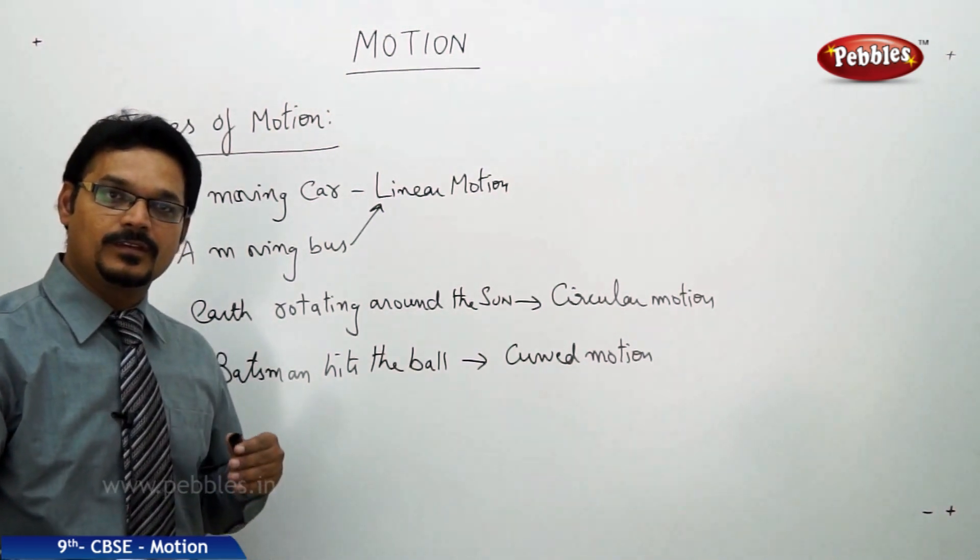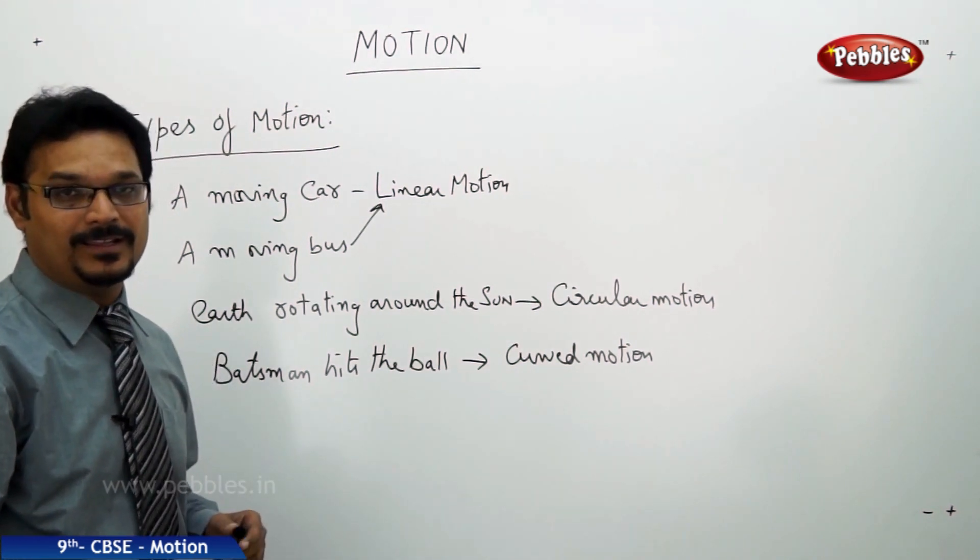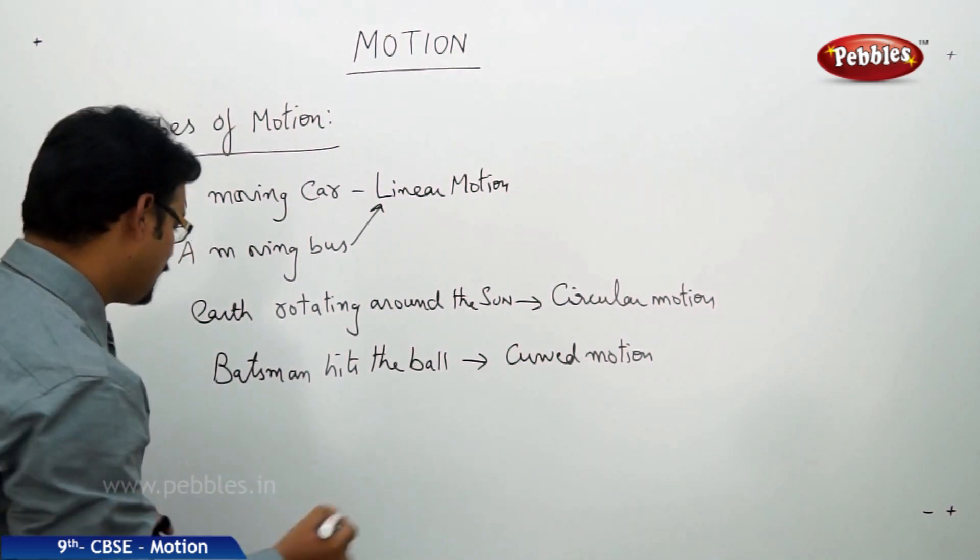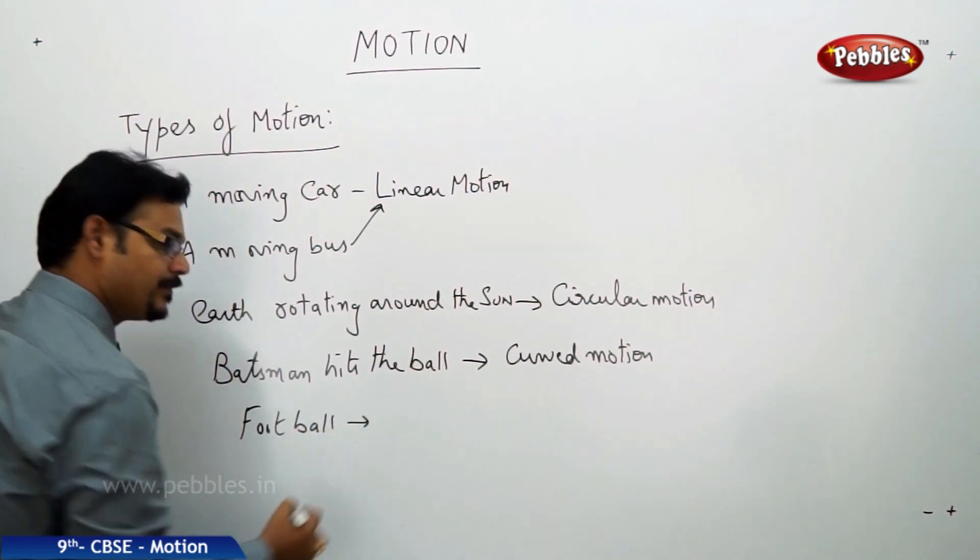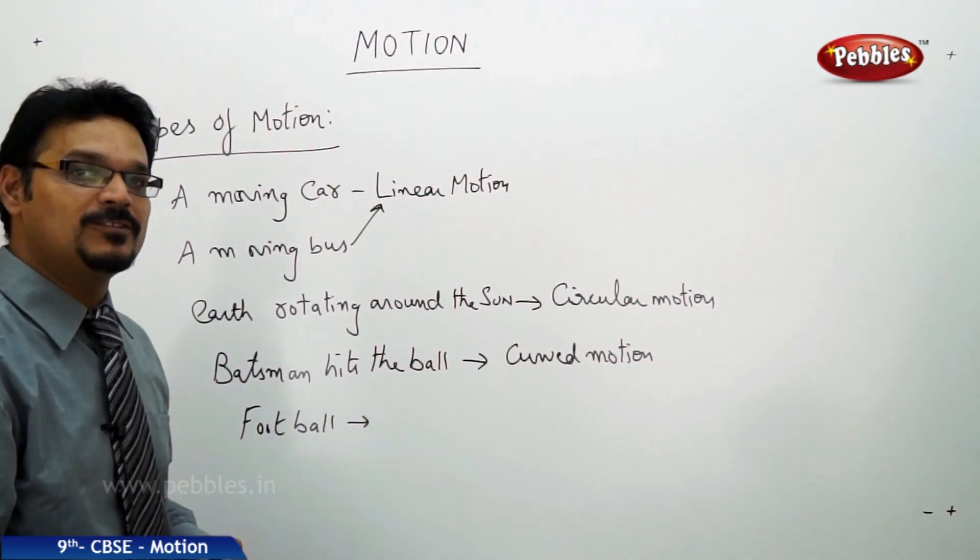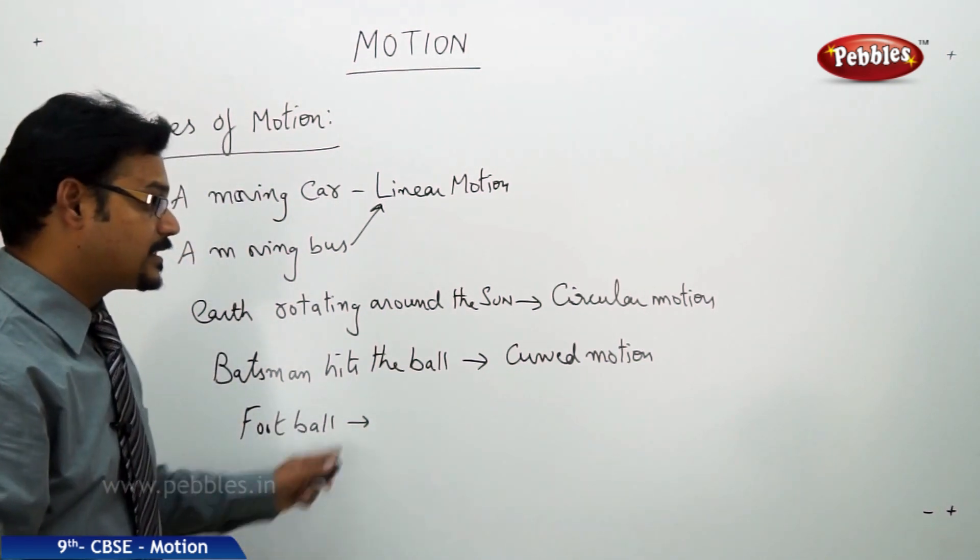A football player hits the ball, a football player kicks the ball. Then what is the path of the ball? Football kicked by a football player, what is the path of the ball? Yeah, maybe this type. Yes, of course you are correct, it is curved motion, but specifically it is called projectile motion.